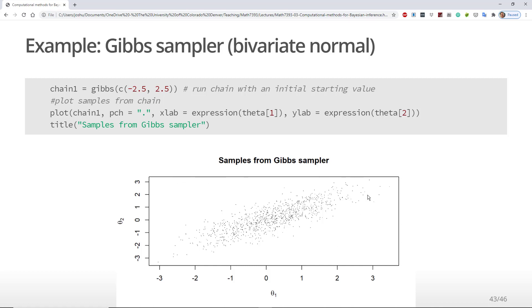Unsurprisingly, the samples look a lot like what you would expect from a multivariate normal distribution.